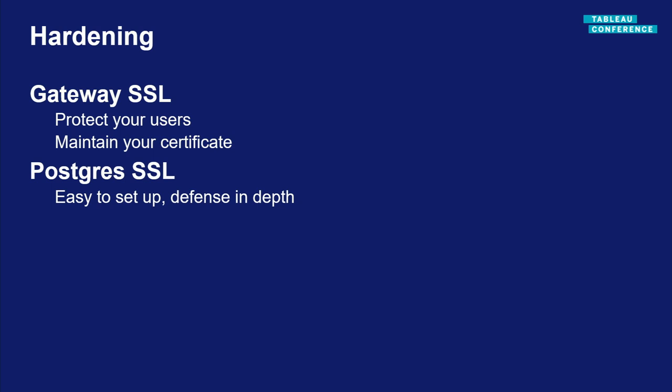Next up, repository SSL or Postgres SSL. The repository is our database — it contains a lot of sensitive data and is a high-value target. By setting up SSL here, you get defense in depth and protect this data in transit. It's very easy to set up — a single command or a single option in the UI. For most use cases, there's no reason not to set this up. However, if you query the database externally, you might find you don't want to trust this self-signed certificate. The command also allows Postgres to accept connections from outside the cluster, so check out the documentation for this feature.